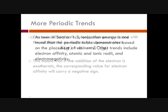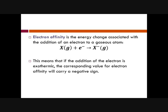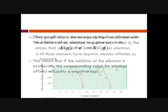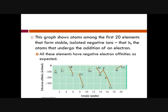Electron affinity is actually new this year to the AP exam, though it's not a new concept — it's just newly tested. Electron affinity is the energy change associated with the addition of electrons. Ionization energy involves pulling electrons away, whereas electron affinity is about how much energy you get when you gain an electron. Since you're gaining electrons, which have negative charge, the energy value will carry a negative sign.